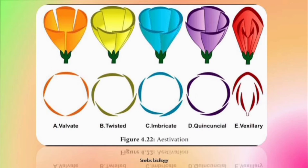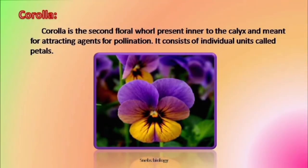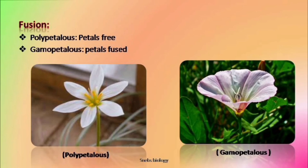How these sepals are arranged on the thalamus in a circular manner — this aestivation is actually common for both sepals and petals. That's why we discuss aestivation after the discussion of corolla. Next comes the second whorl from the outside, that is corolla. The individual members are known as petals. If the petals are fused, the condition is called gamopetalous, and if they are free, the condition is called polypetalous.